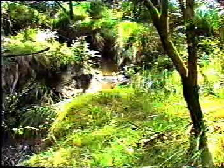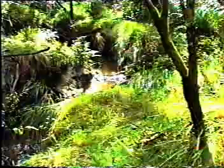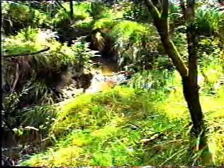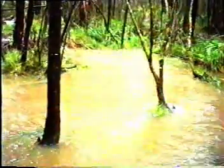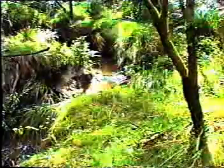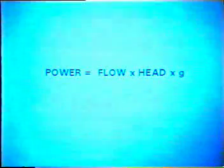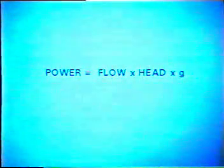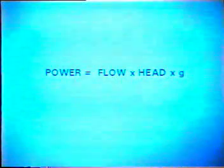Another consideration in the design of the system is that a small babbling brook can turn into a raging torrent after heavy rains. This video has looked at hydroelectric schemes ranging from 10 megawatts to 50 watts. They are all governed by the same equation: Power equals flow times head times G.